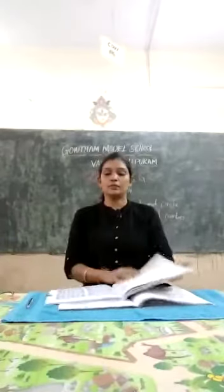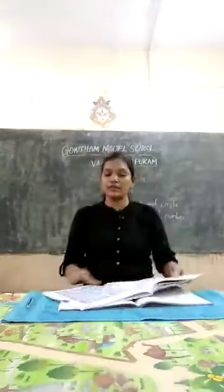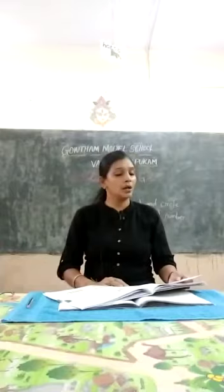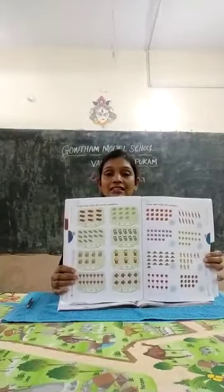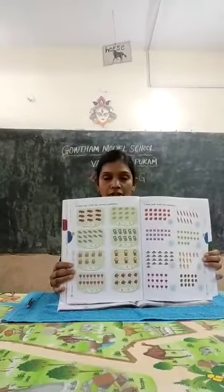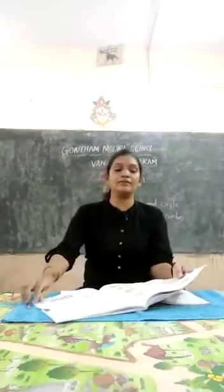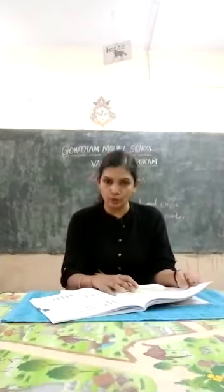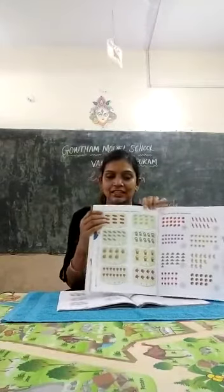In the previous class we completed up to page forty-seven, so today we will learn page number forty-eight. Here it says 'count and circle the correct numbers.' In LKG you have already learned how to count and circle the correct number. Today we are going to revise all these topics. One example is already done for you.